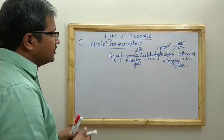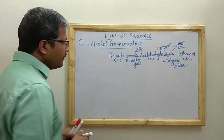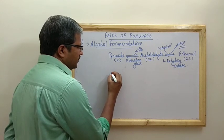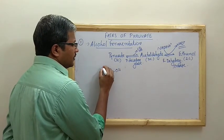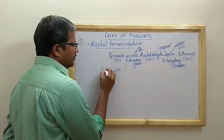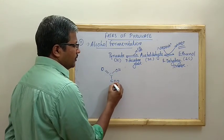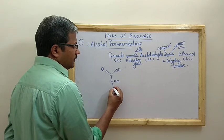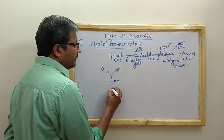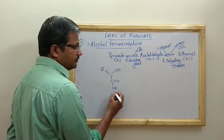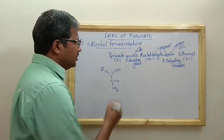Let us see the structure of pyruvate. It has a COOH group, a C=O (keto) group, and then CH₃ — that is the three-carbon structure of pyruvate.